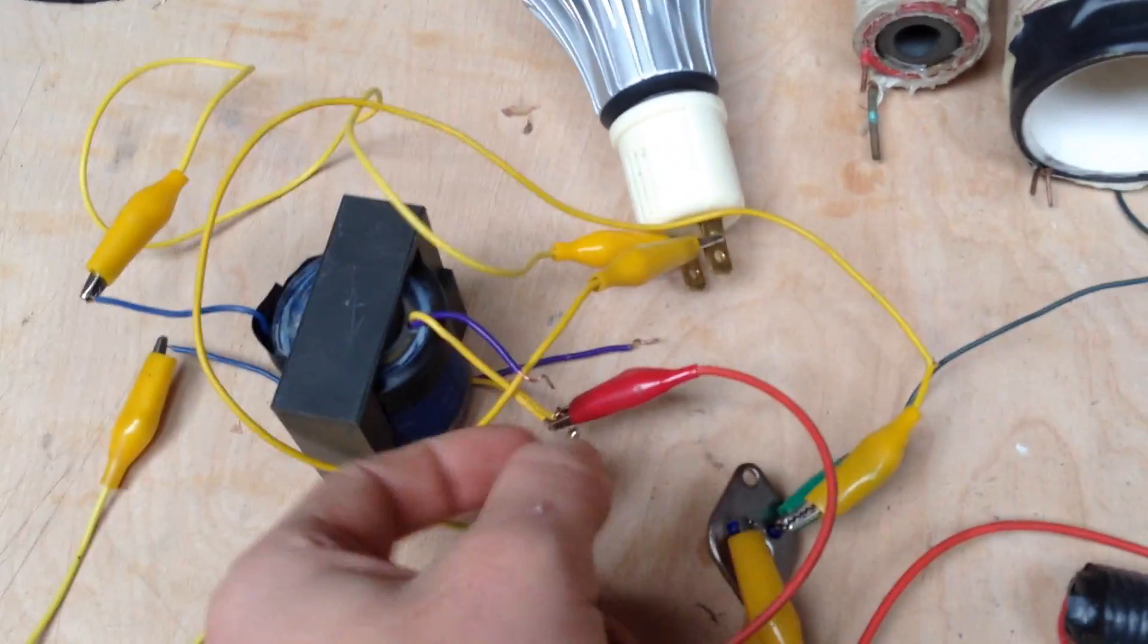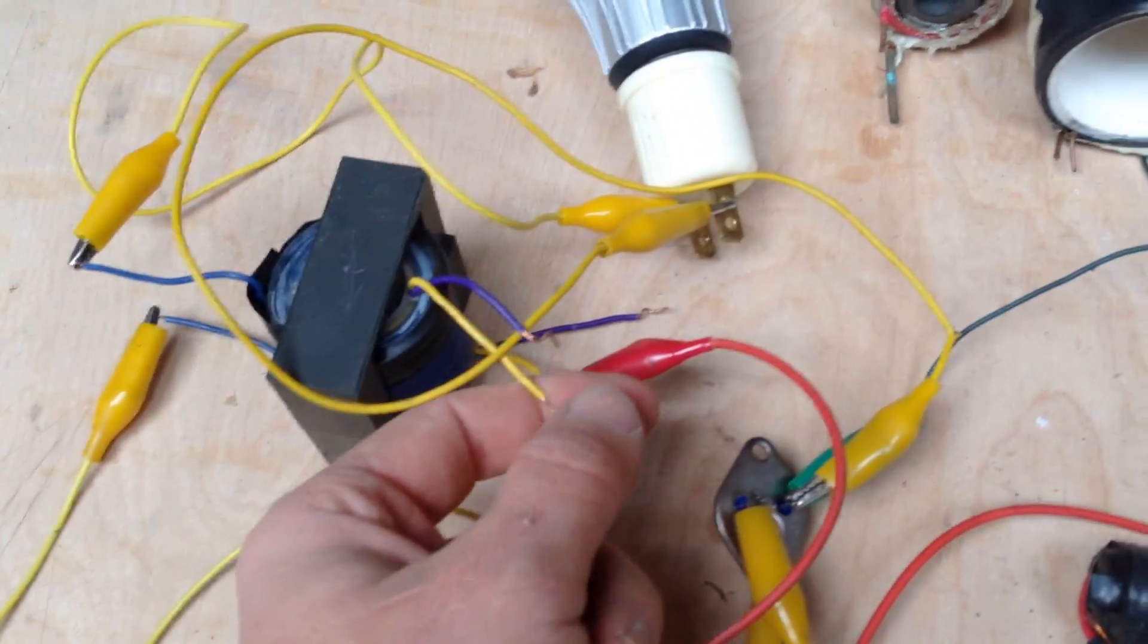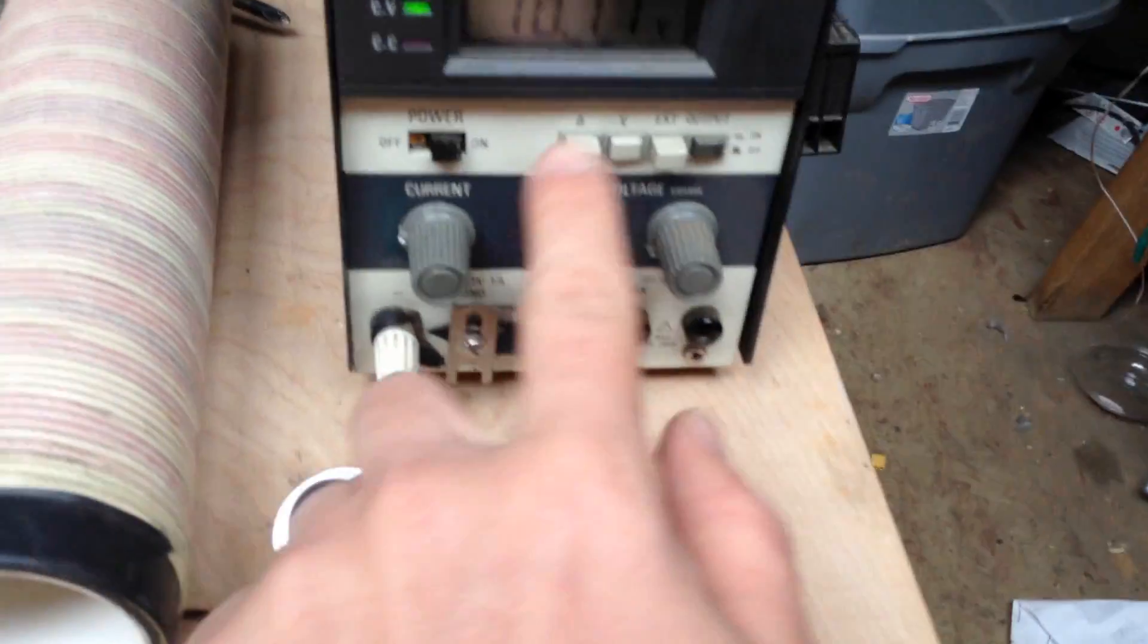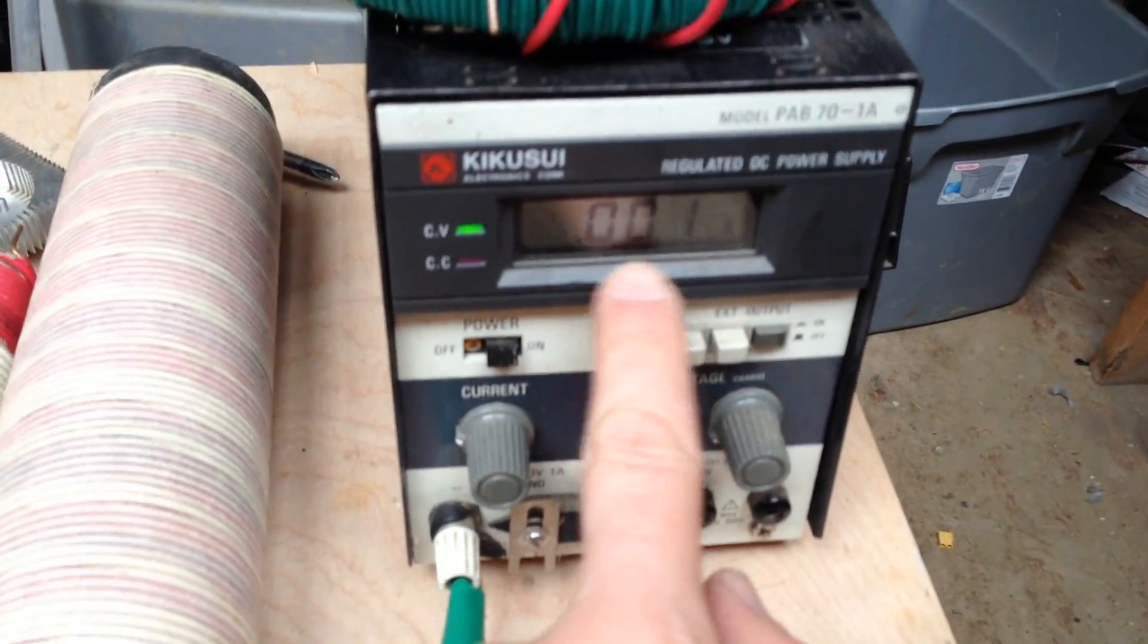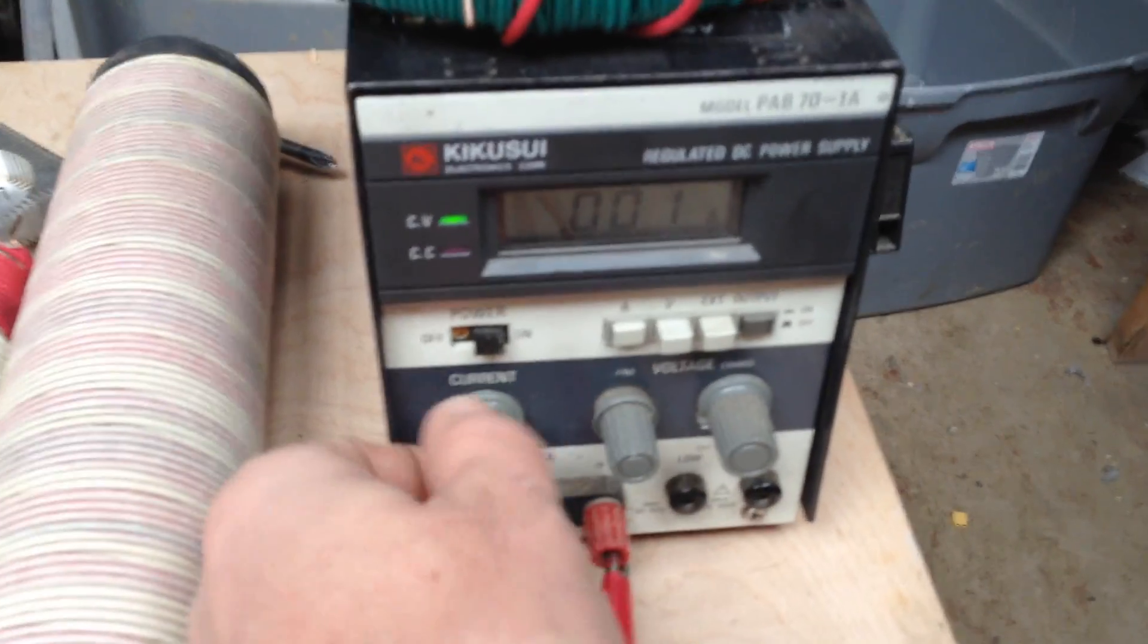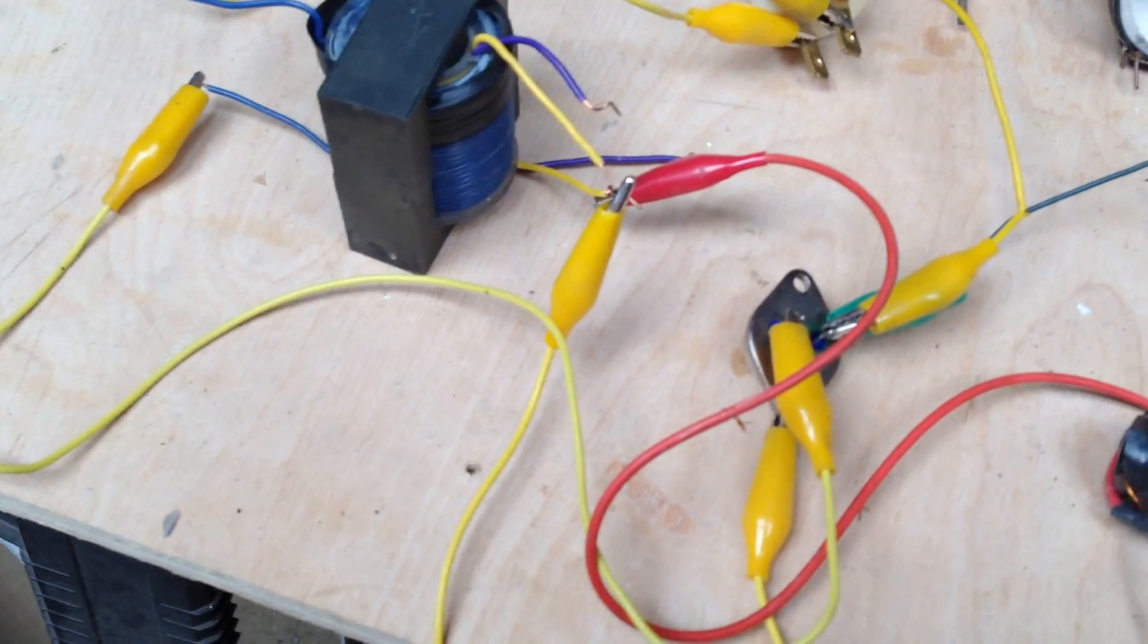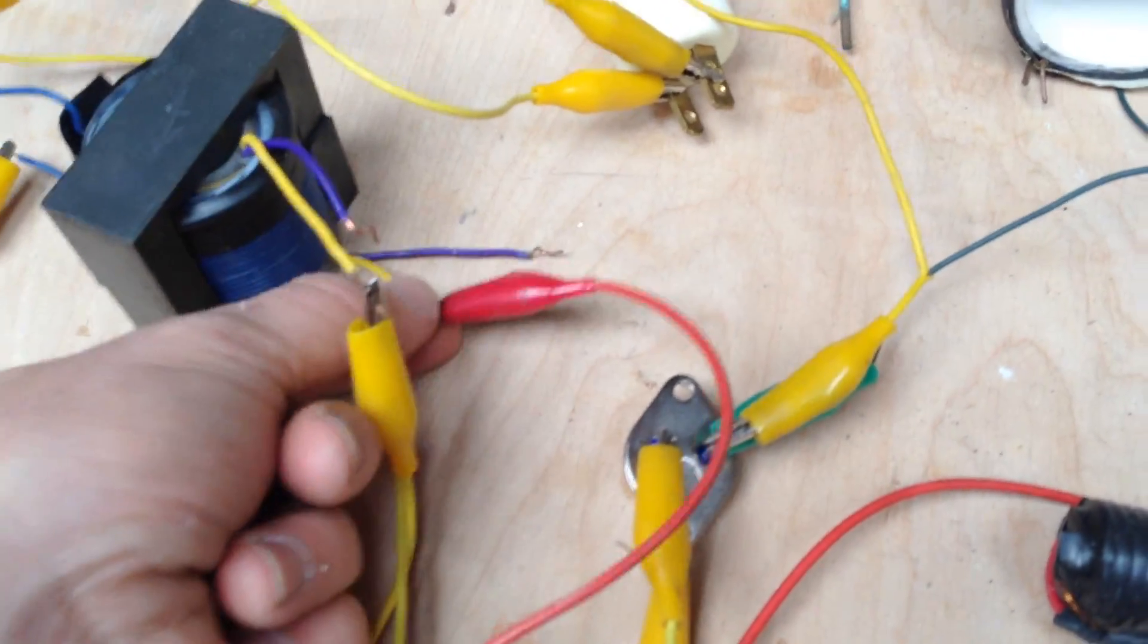We've got our circuit all set up here and nothing's coming on. I can tap the wires around, there's just no action whatsoever. If I switch over here to the amp draw, we're pulling no amps. So that's another thing I would always check. We're pulling no amps and no action on the circuit.